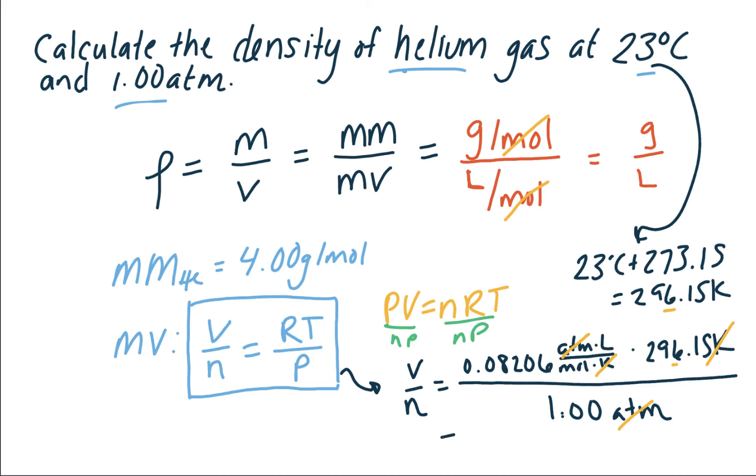If you calculate that all out, we see that the molar volume at 23 degrees Celsius and 1 atmosphere is 24.302 liters per mole. That answer, so far, makes sense because we know at standard conditions, so 273 Kelvin and 1 atmosphere, that the molar volume is 22.4 liters per mole. So because our temperature has raised a little bit, we would expect the molar volume to be a little bit more than that.